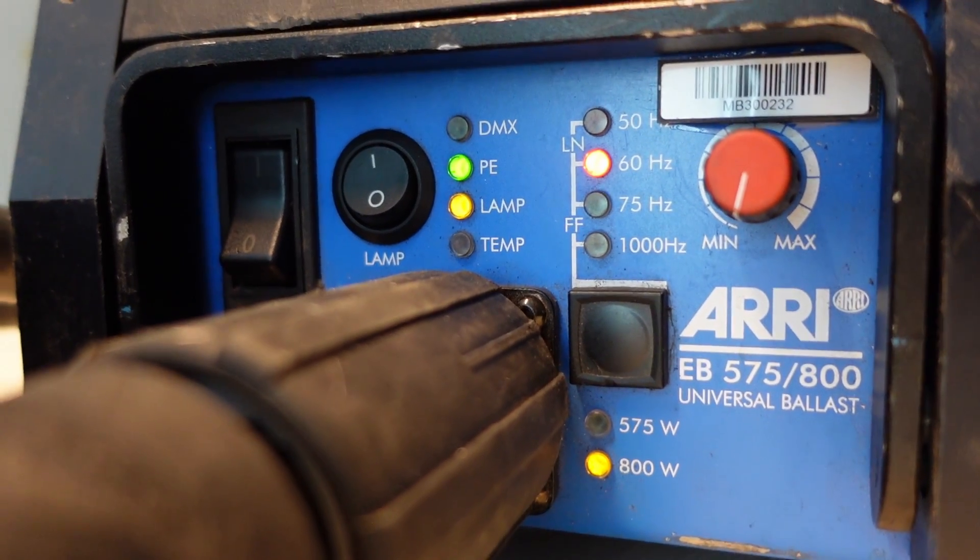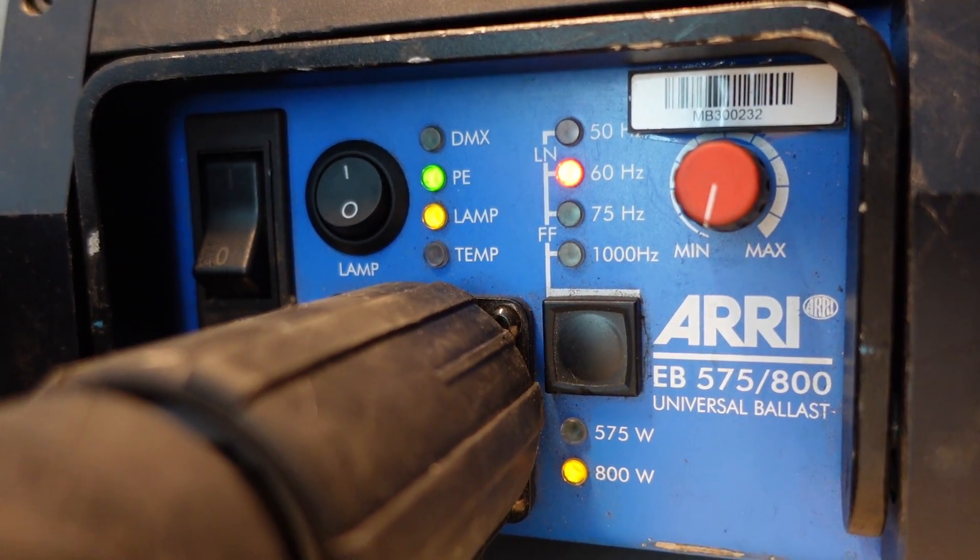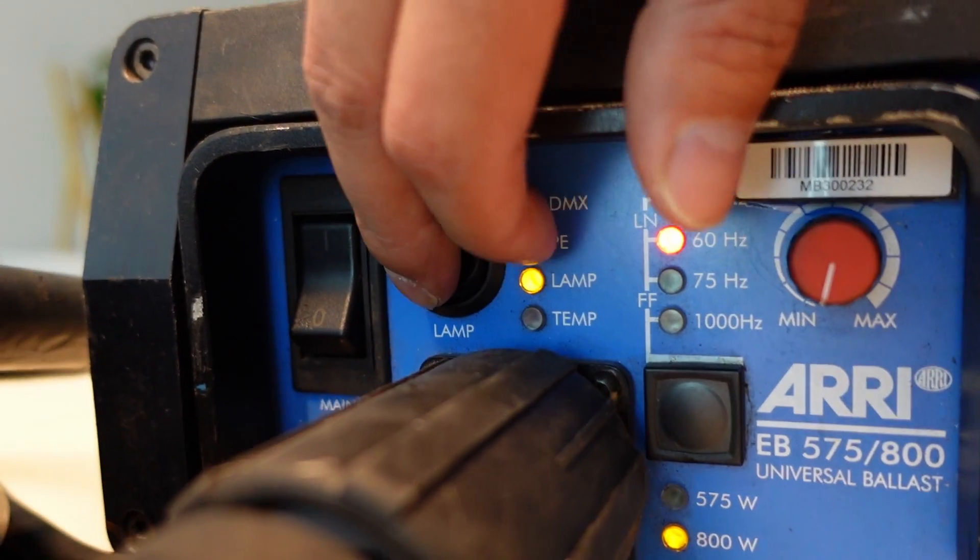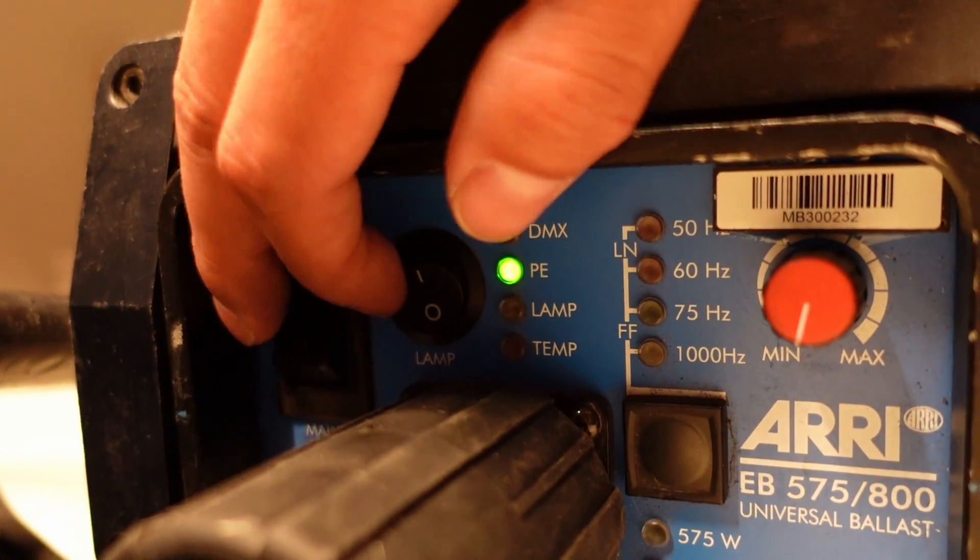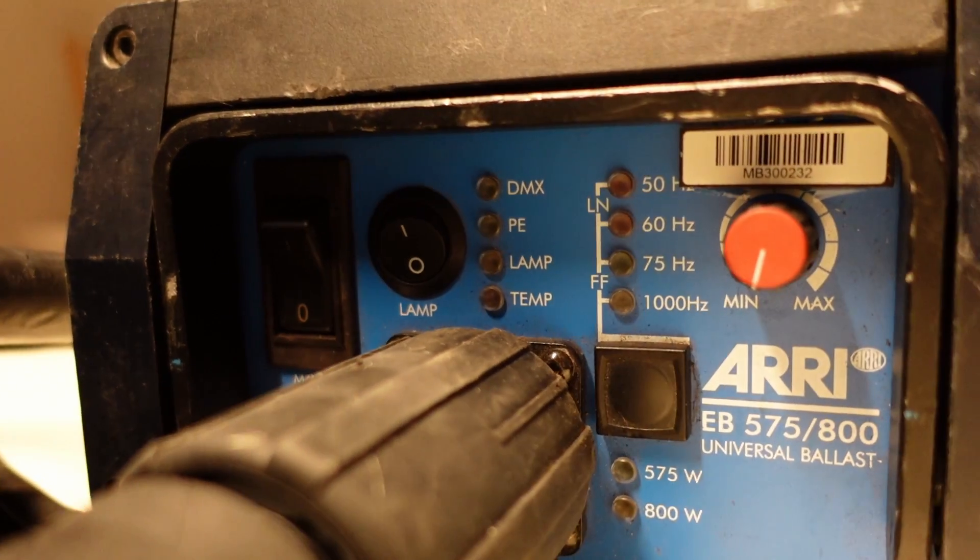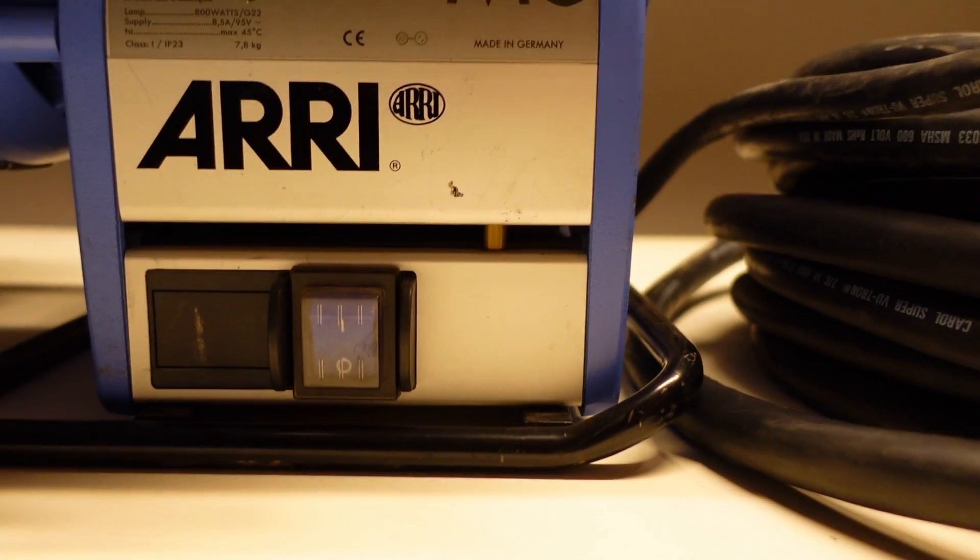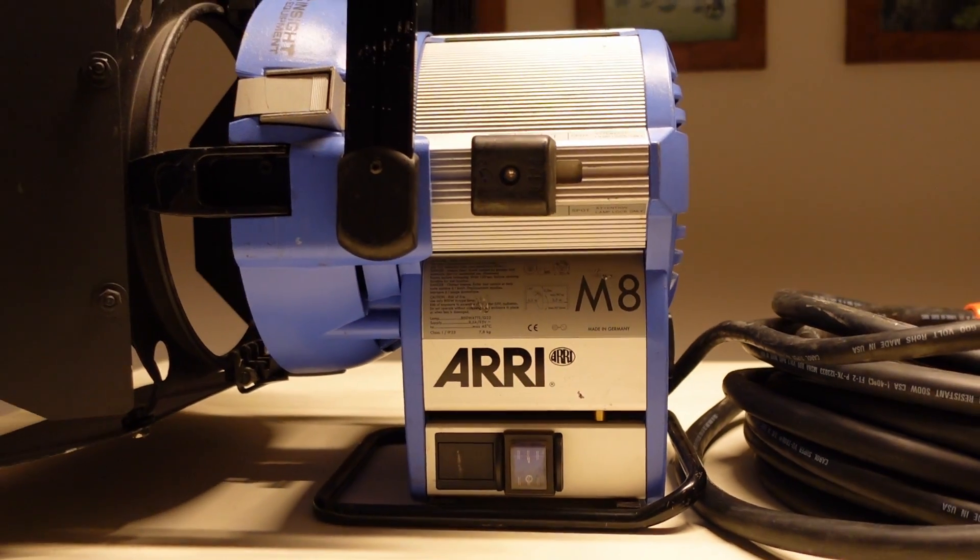To turn off the HMI system, you want to hit the lamp switch first, which is the circle switch, and then you want to hit the ballast. Lastly, you want to hit the switch on the head. Then you can disconnect it from power, disconnect the header cables, and wrap up the header cables and the ballast. You want to make sure to let the head cool off before you put it away.